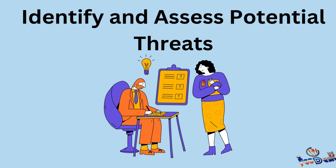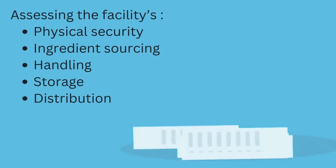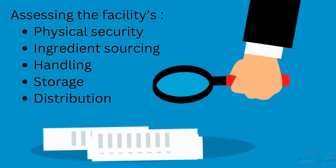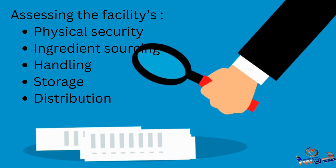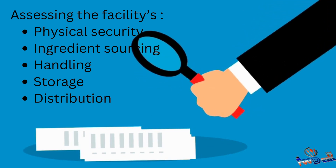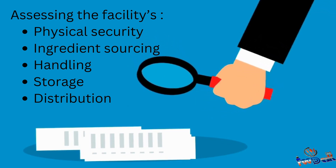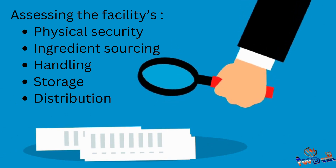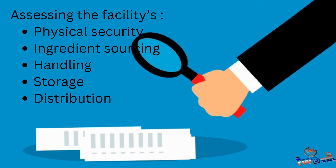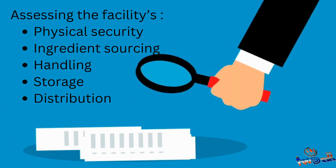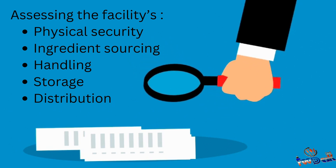Let's look at how to develop a food defense risk assessment and walk through a real-life case study to understand how these principles apply in practice. Step 1: Identify and assess potential threats. A food defense risk assessment begins by identifying possible threats across all parts of the production and supply chain. This includes assessing the facility's physical security, ingredient sourcing, handling, storage, and distribution.